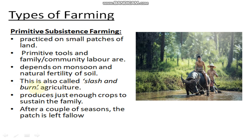Primitive Subsistence Farming is also called slash and burn farming — trees are cut down and burned, and then harvesting is done. It produces just enough crops to sustain the family, so it is totally family-oriented agriculture. After a couple of seasons, the patch of land is left fallow.